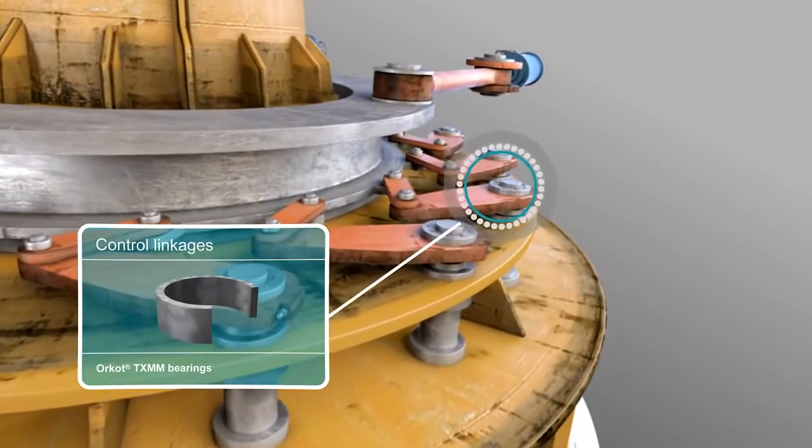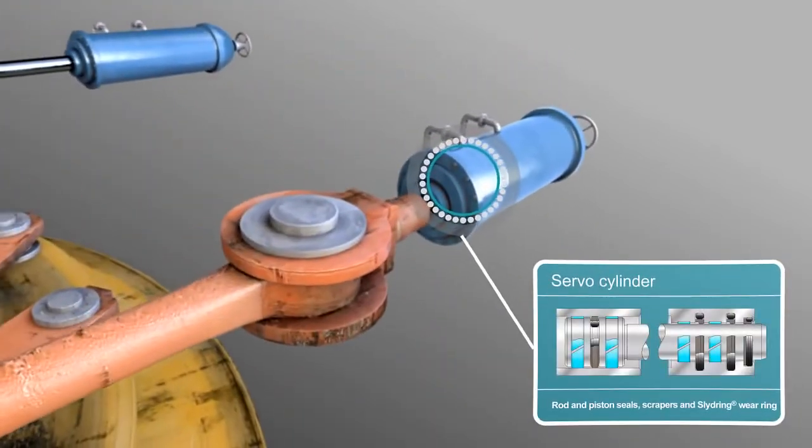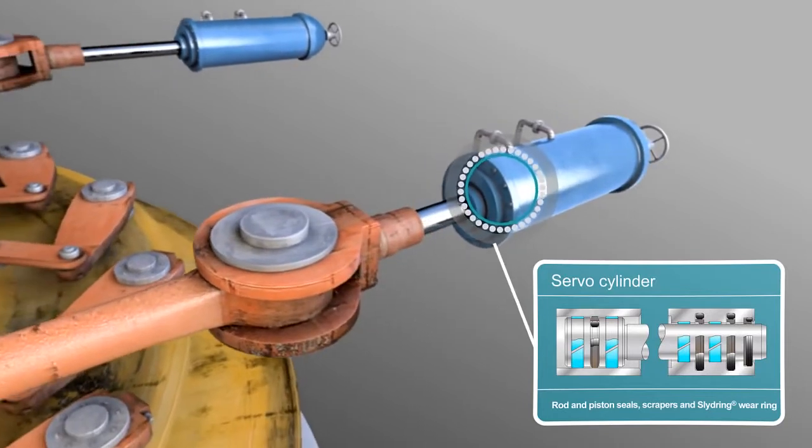On the control linkages, Orcott TXMM bearings guarantee long life. On the servo cylinder, a complex sealing system is available.